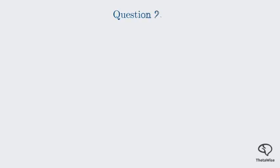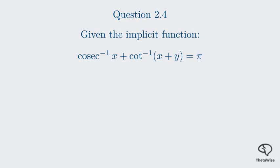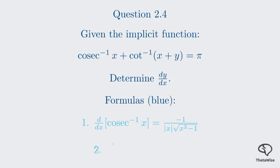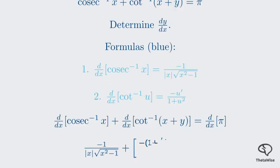We've reached the final question, 2.4. We are given the implicit function cosec inverse of x plus cot inverse of the quantity x plus y, equals pi. Our task is to determine dy/dx. Since the equation is not explicitly solved for y, we'll use implicit differentiation — differentiating each term with respect to x and remembering to use the chain rule on terms containing y. The derivative of cosec inverse of x is negative 1 over the absolute value of x times the square root of x squared minus 1. The derivative of cot inverse of u is negative u prime over 1 plus u squared.